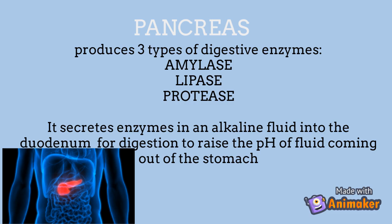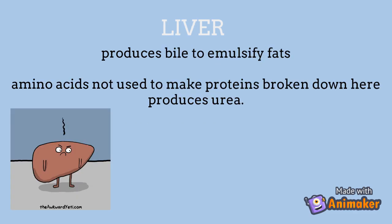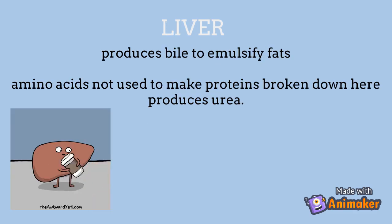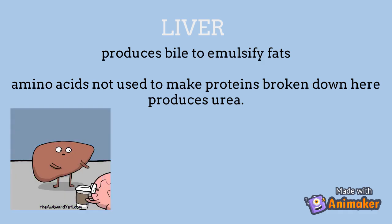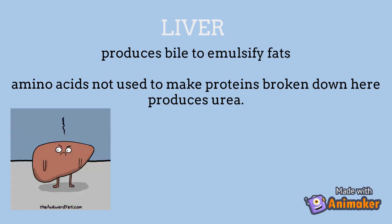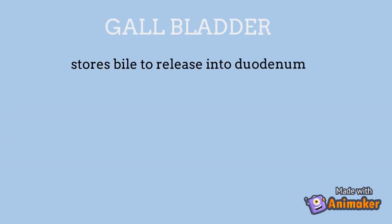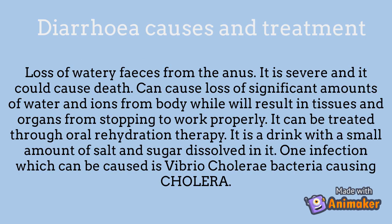The pancreas also secretes enzymes and alkaline fluid into the duodenum for digestion, raising the pH of the fluid coming out of the stomach. The liver produces bile to emulsify fats, and amino acids not used to make proteins are broken down here to produce urea.